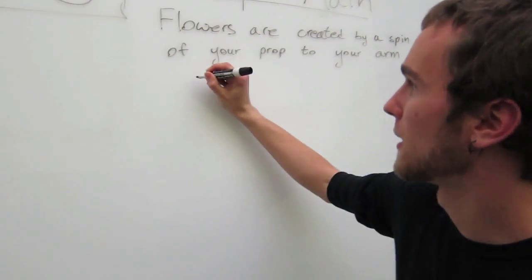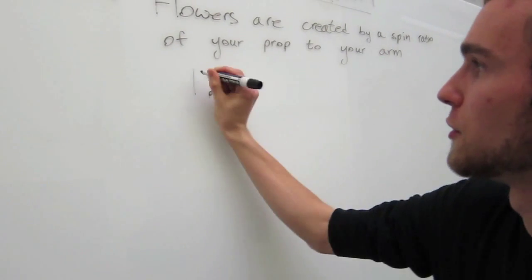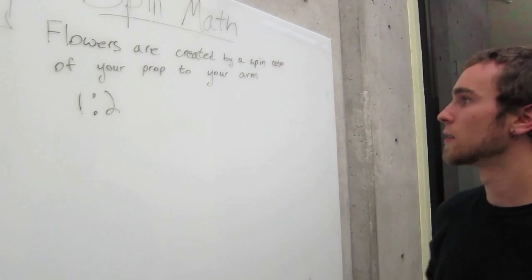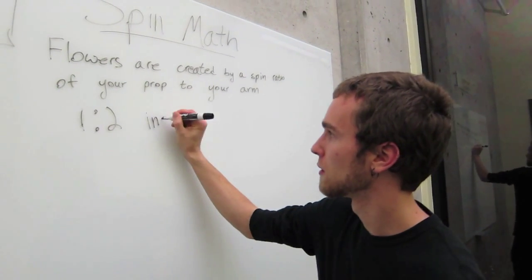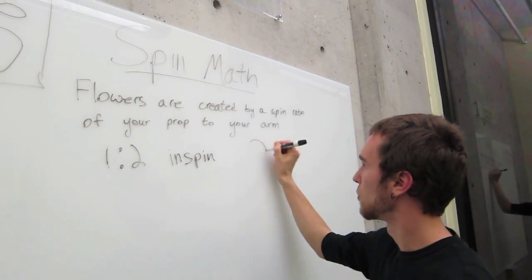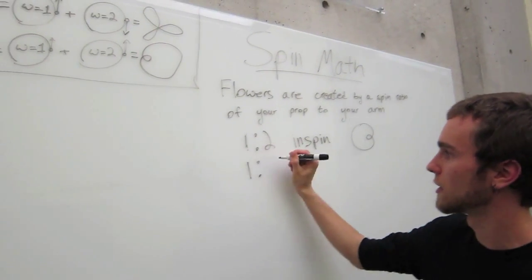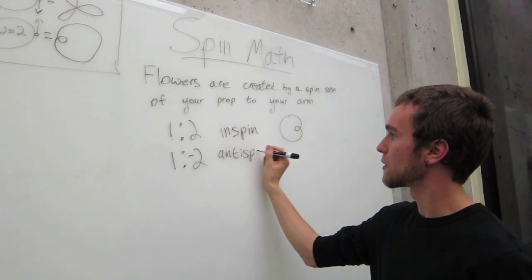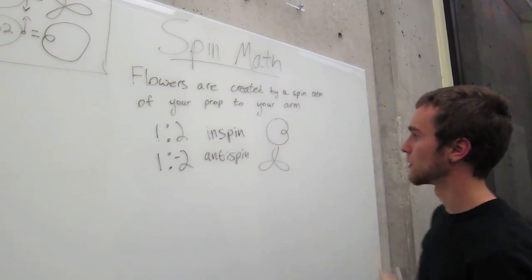We notate flowers a lot of the time as a ratio of spin, say, one to two. This generally means one rotation of the arm to two rotations of the prop, which in-spin results in a one-petal in-spin. And anti-spin, which we sometimes notate as one to minus whatever the other number is, gives us a three-petal anti-spin, sometimes called a triketra.